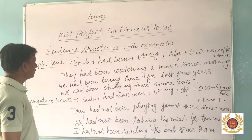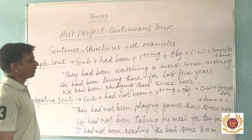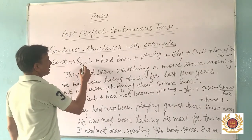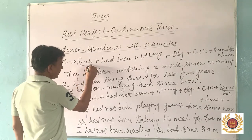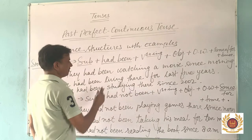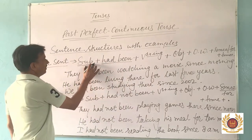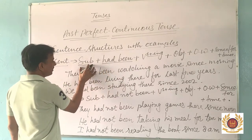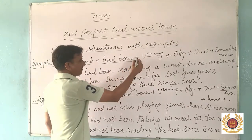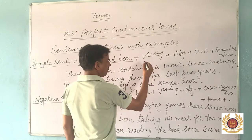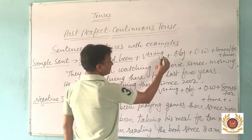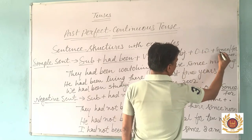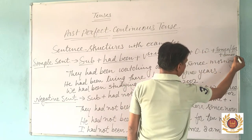Now I will explain the sentence structure with examples in Past Perfect Continuous Tense. In a simple sentence, we follow this structure: first, the subject is written; then we use 'had been' with all types of subjects. Then the main verb is written with '-ing' — we use the first form of verb with '-ing'. Then the object, then other words or complementary words. After other words, we use 'since' or 'for' plus time, and a full stop at last.